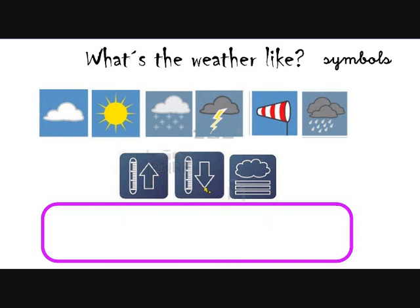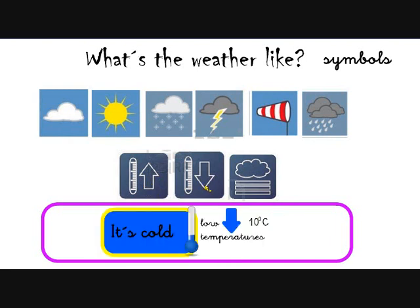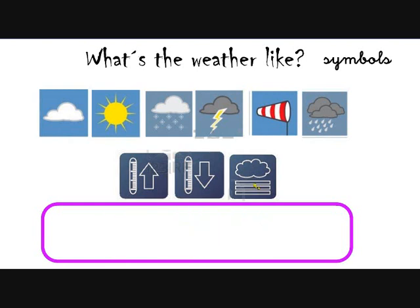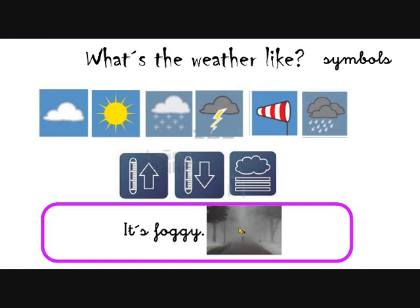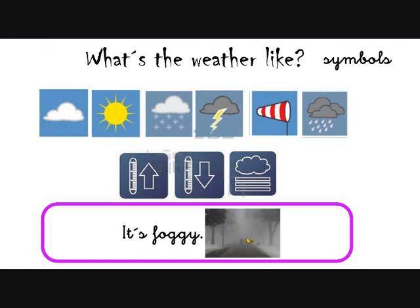And this symbol is the contrary — the temperatures are going down. There are low temperatures, 10 degrees less. So it is cold. And this final symbol, with some horizontal lines, it means that it's foggy. We see fog, and it's difficult to see through the fog. A lot of clouds on top of the floor.